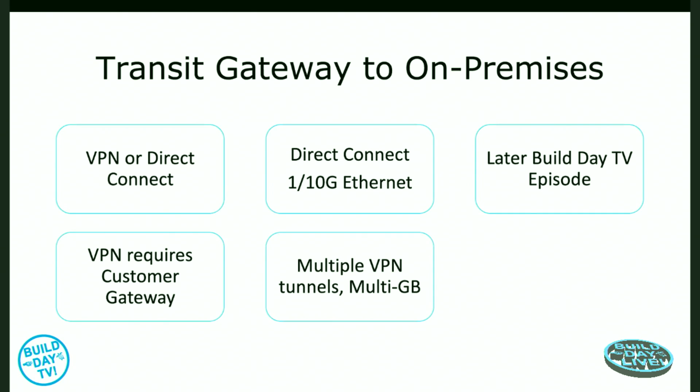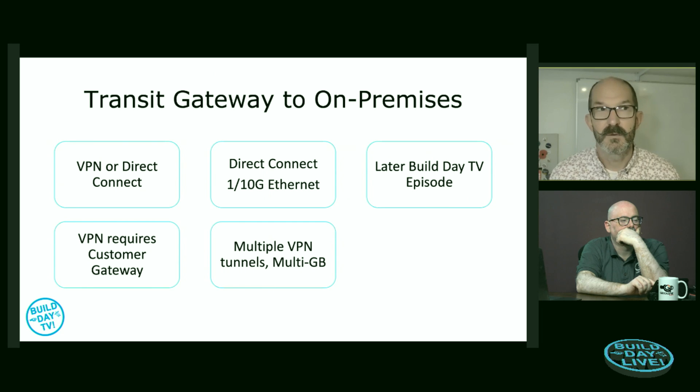One fundamental difference with the Transit Gateway VPN is it supports multipathing. With VPC-based VPNs, we can stand up two VPN tunnels but only one will be used, giving a maximum throughput of about 1.25 gigabits per second. With Transit Gateway VPN, we can have more than two tunnels. AWS has tested this with 40 tunnels, giving 50 gigabits per second of aggregate throughput — that's 40 times 1.25 Gbps. So the Transit Gateway's VPN is significantly more capable than the VPC's VPN.